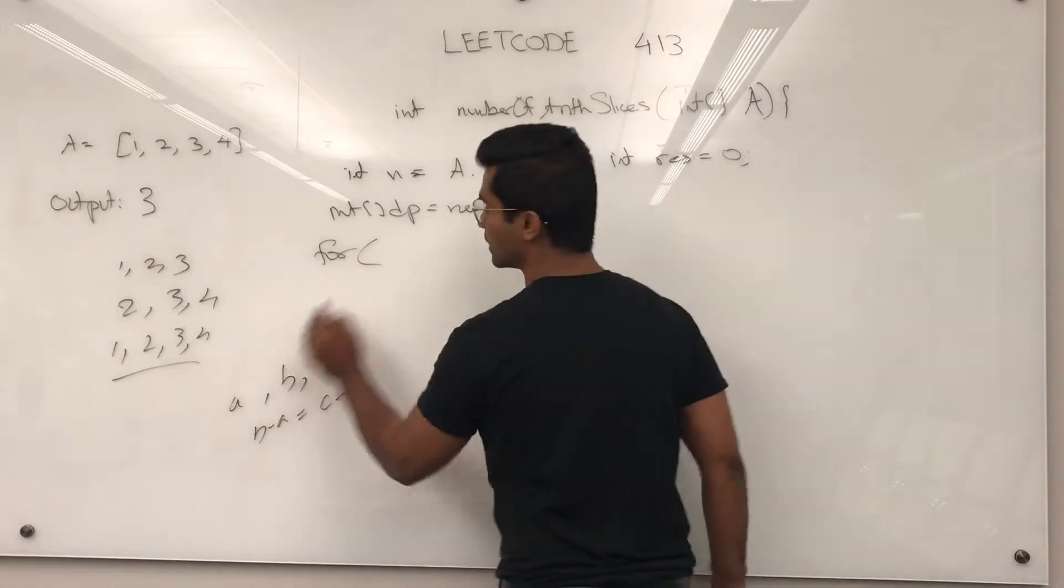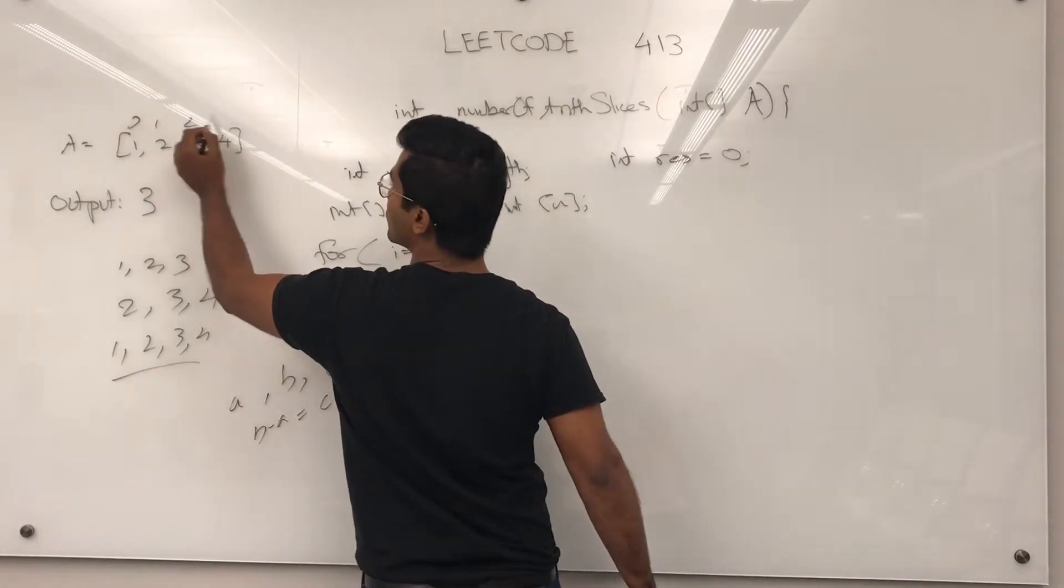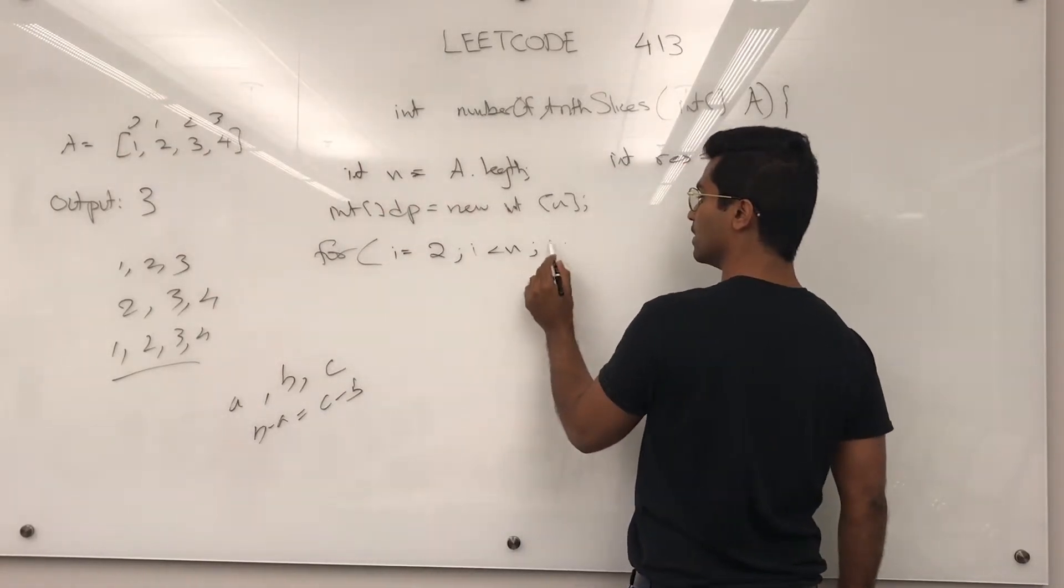So since we need 3 at a time, we're going to start at i is equal to 2 because it's going to go 0, 1, 2, 3, we need that, i is less than n, i plus plus.